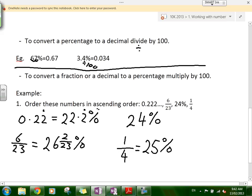So then we can order them. Which is the smallest? We want ascending order, so we need the smallest one. 22.2% is the smallest, so this is one. What's the next one? 24%, so that's two. And then three. And this is the largest.